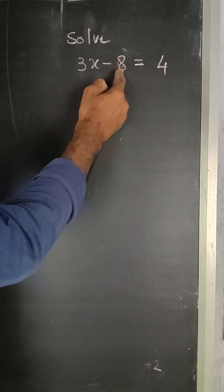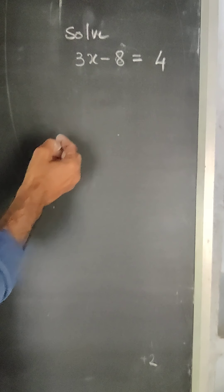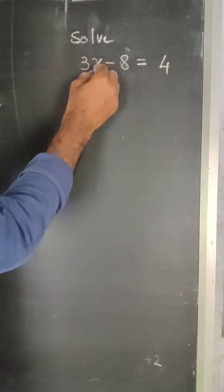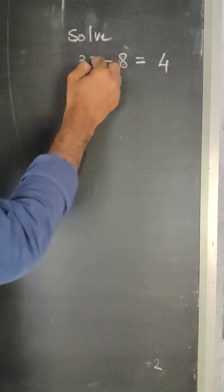Solve 3x minus 8 is equal to 4, that is what we have to solve. What it means is, this x is the unknown, we have to find out what x is.